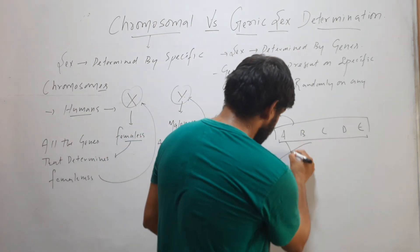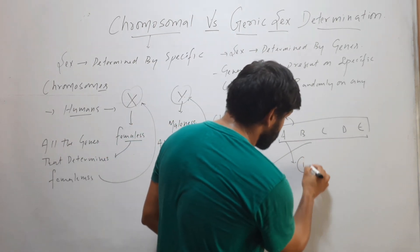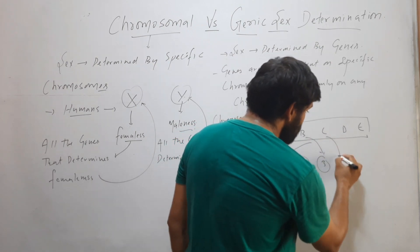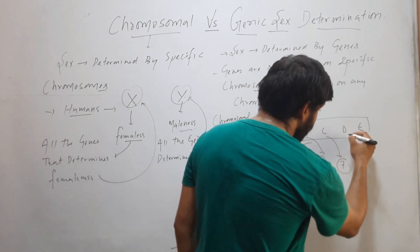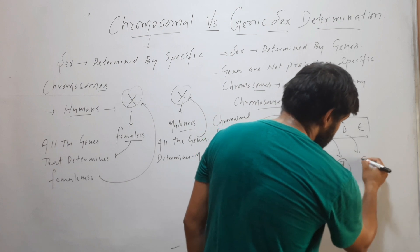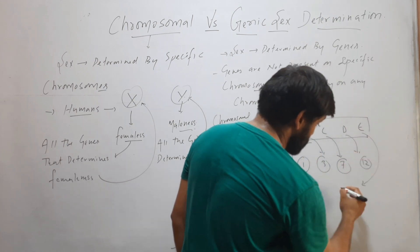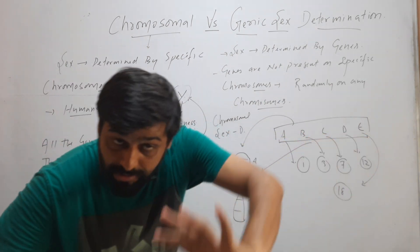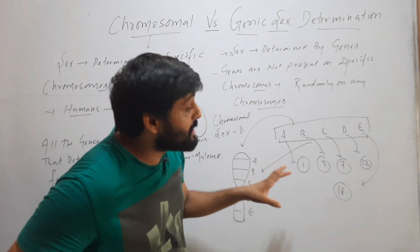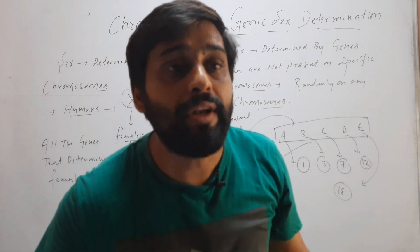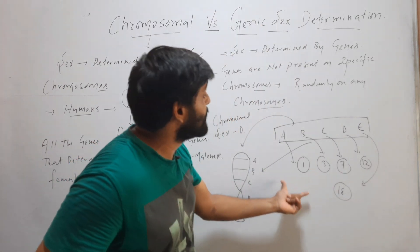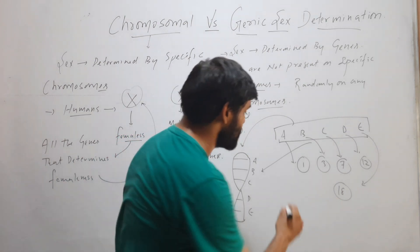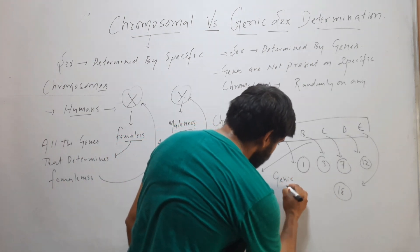But if gene A is present on chromosome number 1, gene B is present on chromosome number 3, gene C is present on chromosome number 7, gene D is present on chromosome number 12, and gene E is present on chromosome number 18 — here you can see that sex is determined by these five genes, but these five genes are present randomly on any chromosome. They are not present on any specific chromosome. This type of sex determination will be called genic sex determination.